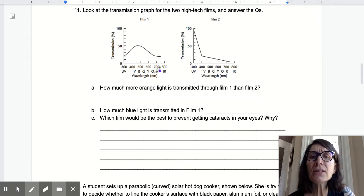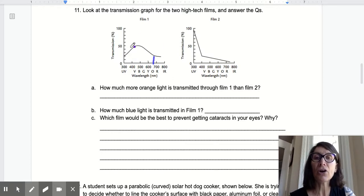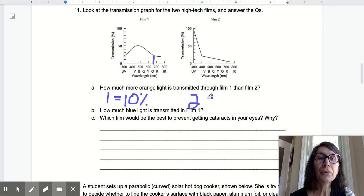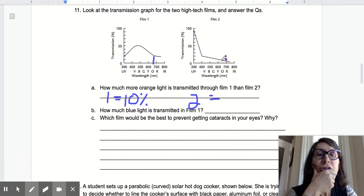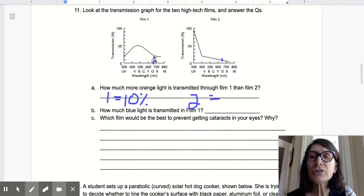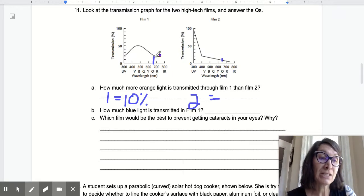Question A says, how much more orange light is transmitted through film one than film two. So orange is here. Film one, if I make my graph up and go all the way over and I look at my scale, about 10% is orange for film one. So one equals 10%. That is transmitted. And now look at film two. Film two for orange is here.